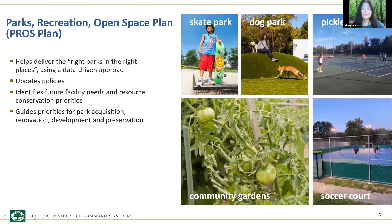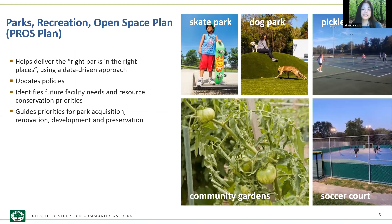Thank you, Michelle. Good evening, everybody. I'm Christina Sasaki, a park planner, and I'll give you a brief overview on how we selected this location for a community garden. This slide illustrates our Parks Recreation and Open Space plan, which we use to help get state funding for our parks department. The plan helps us determine through survey, benchmarking, and research what facilities we need, how much, and where. The survey also measures the need for future facilities, including emerging ones such as dog parks, pickleball courts, soccer courts, skate parks, and community gardens.